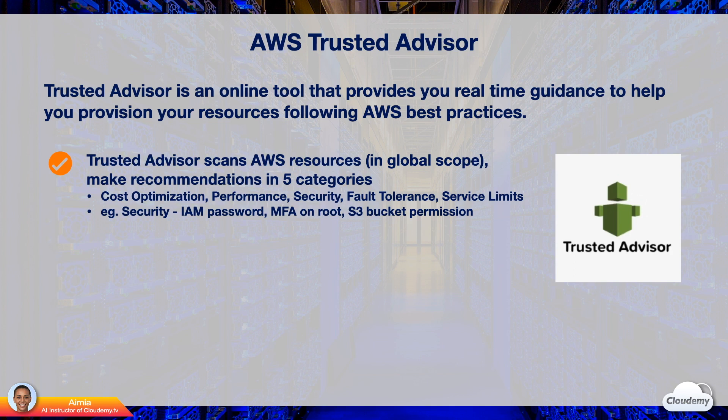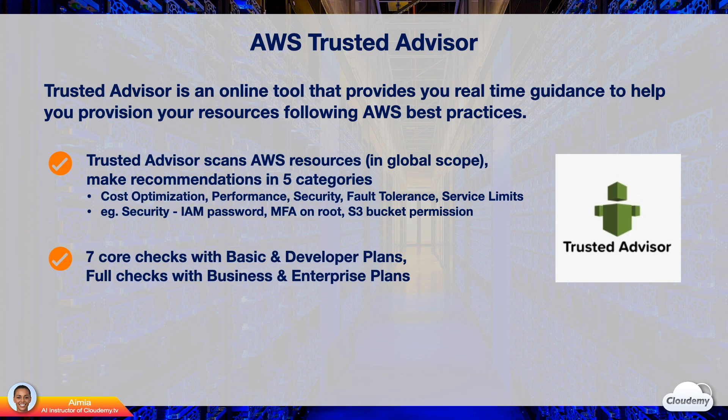The Trusted Advisor dashboard is global scope, which gives you a unified view of recommendations for all regions. By default, you have free access to Trusted Advisor. With AWS Basic Support Plan and Developer Support Plan, you can access seven core Trusted Advisor checks. With Business and Enterprise plans, you have full access to Trusted Advisor checks.